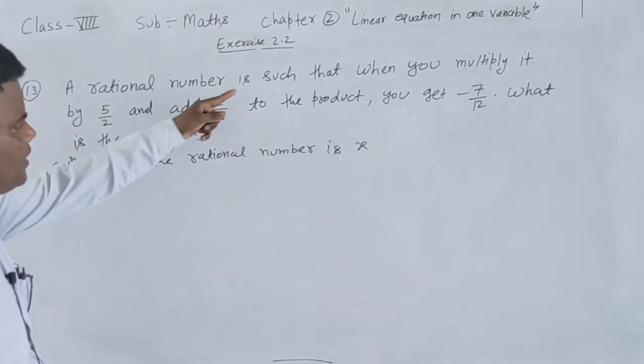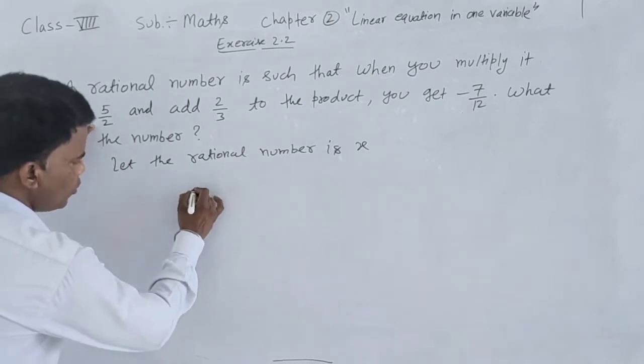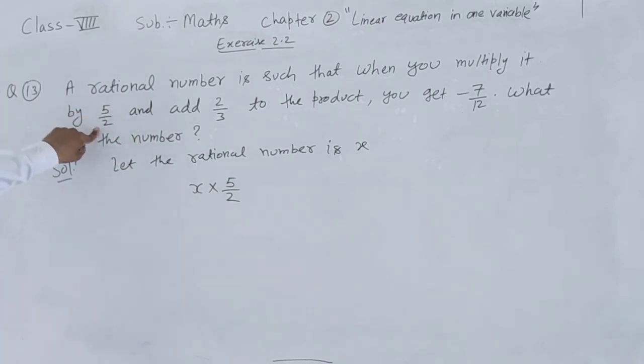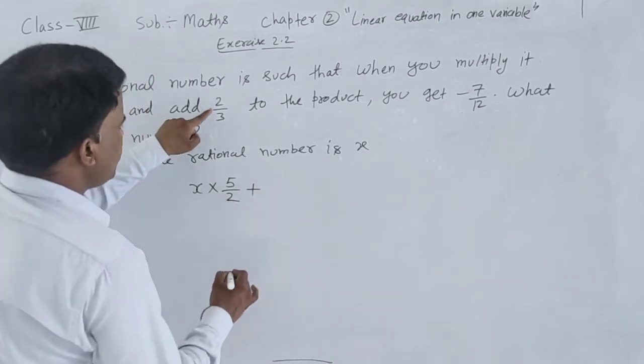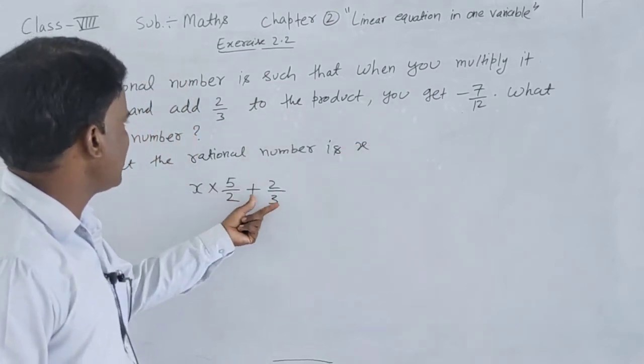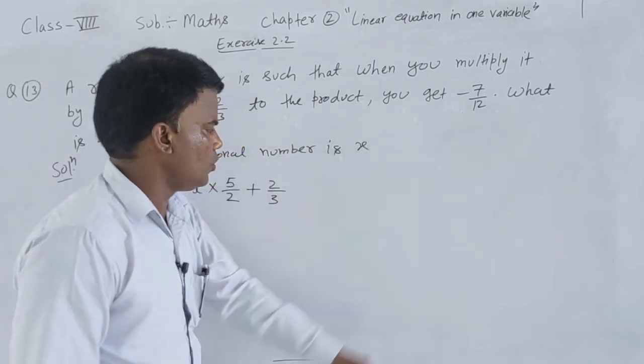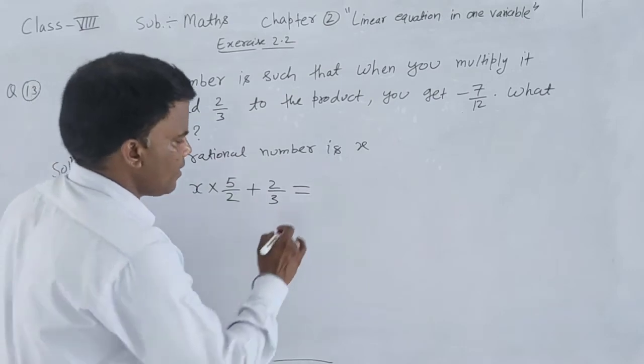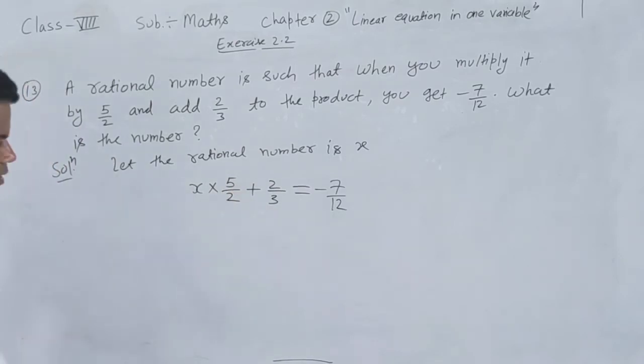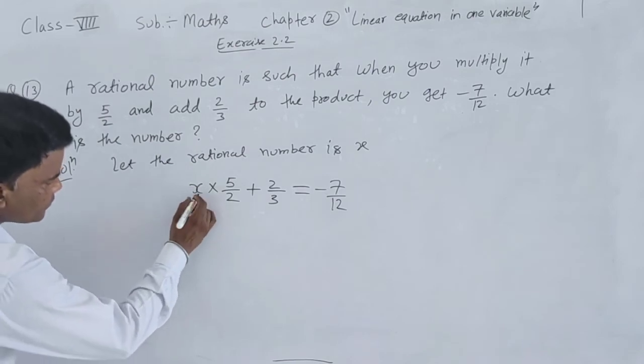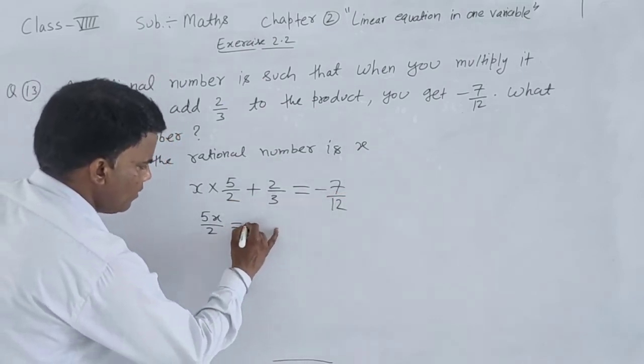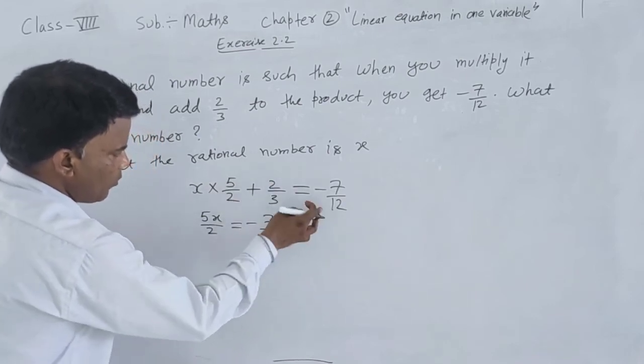According to the question, a rational number is such that when you multiply it by 5 upon 2, x multiply by 5 upon 2. And add 2 upon 3 to the product you get minus 7 upon 12. So the equation is: x times 5 upon 2 plus 2 upon 3 equals minus 7 upon 12.